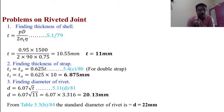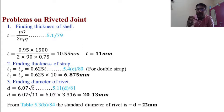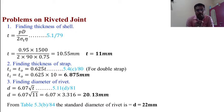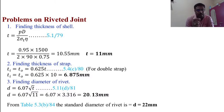Third, finding the diameter of the rivet. d = 6.07√t — equation 5.11 from page 81 of the data handbook. d = 6.07 × √11 = 6.07 × 3.316 = 20.13 mm. From Table 5.3B, page 84, the standard diameter is d = 22 mm.